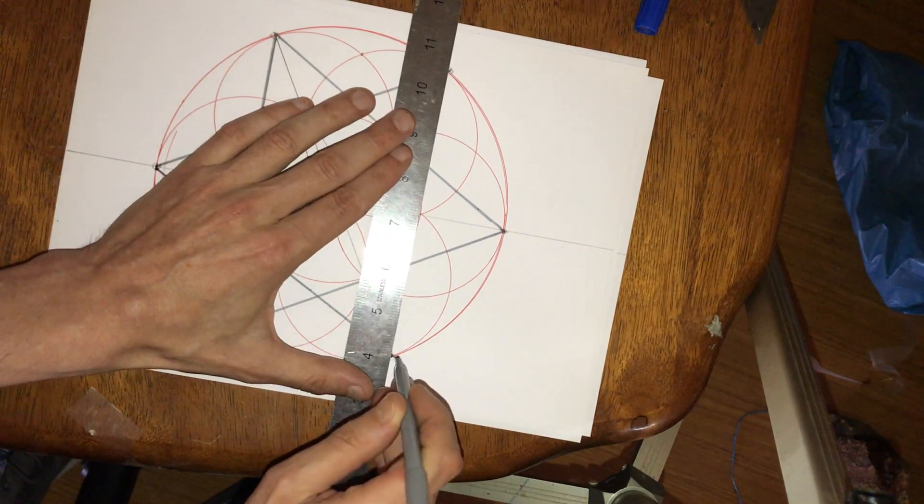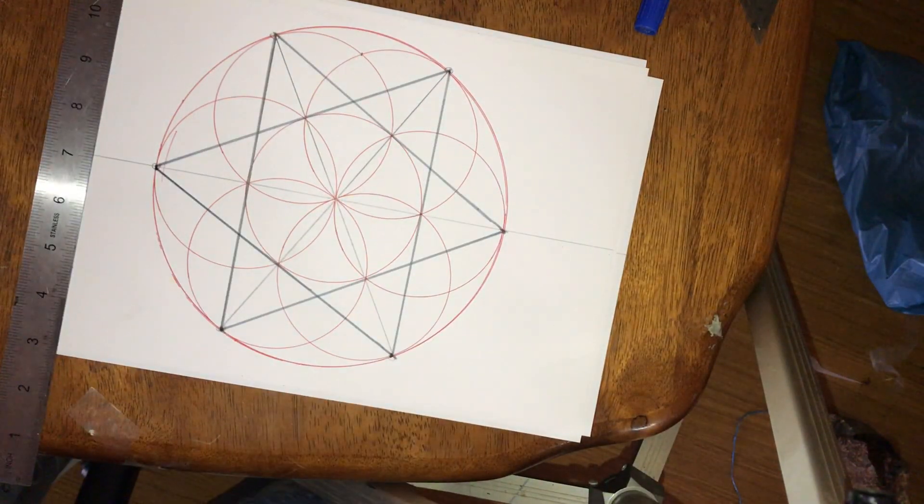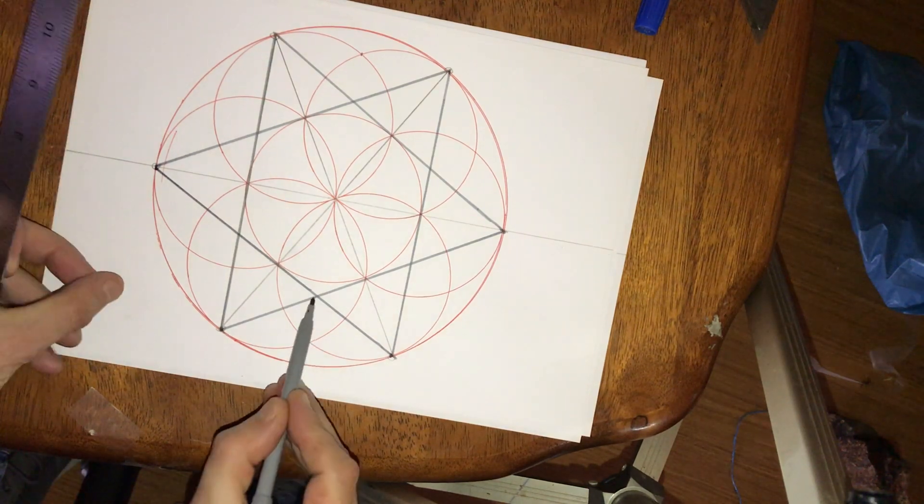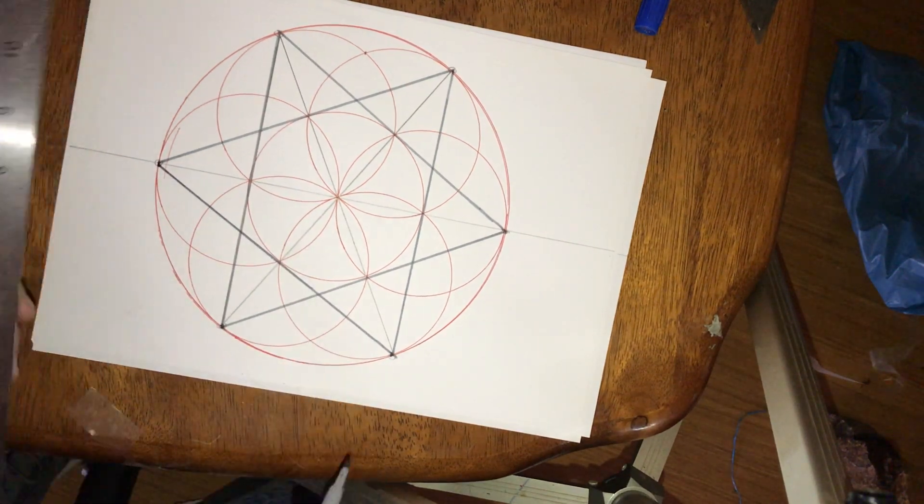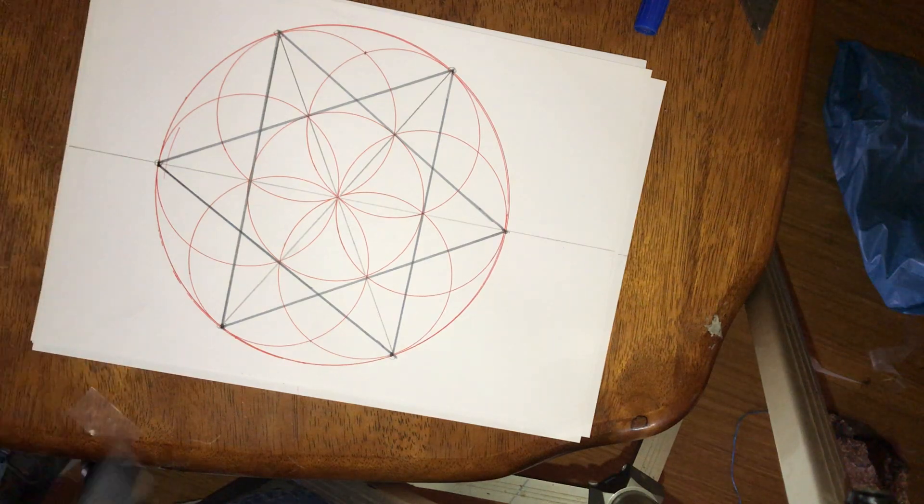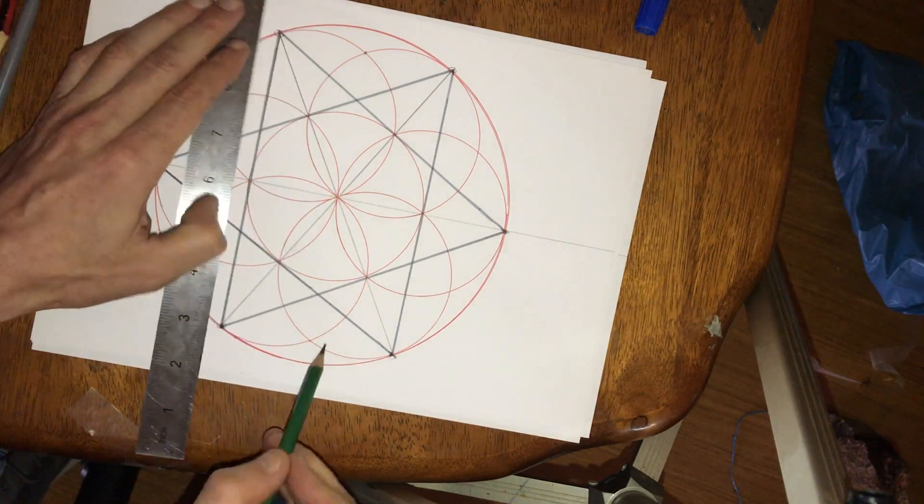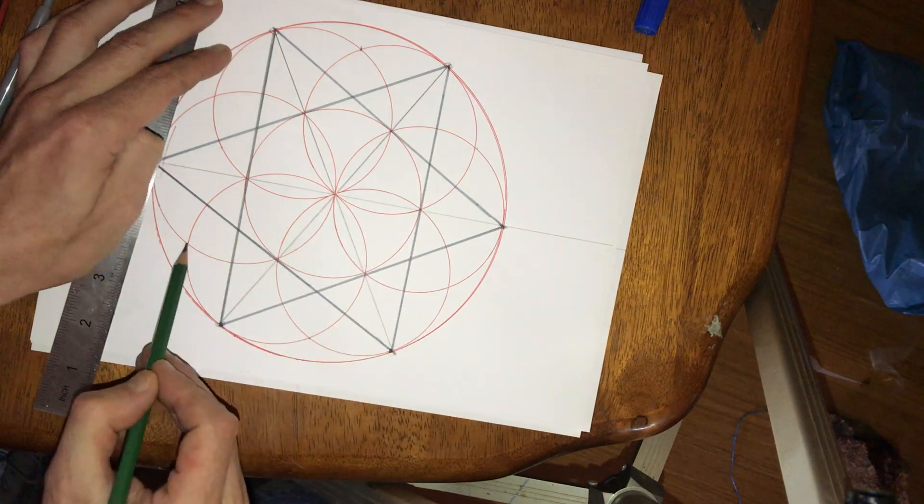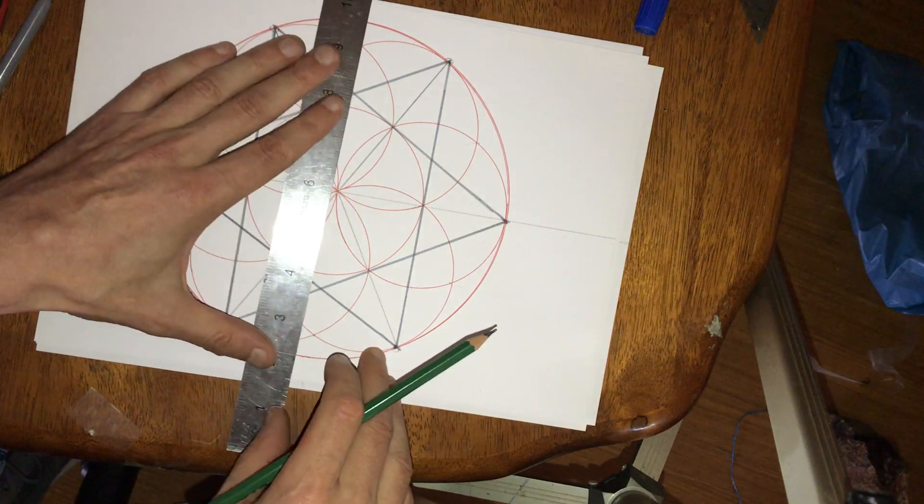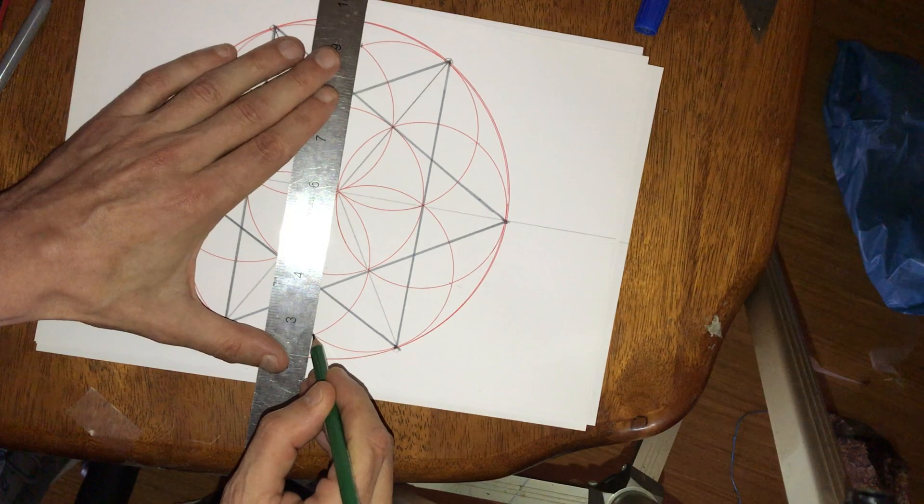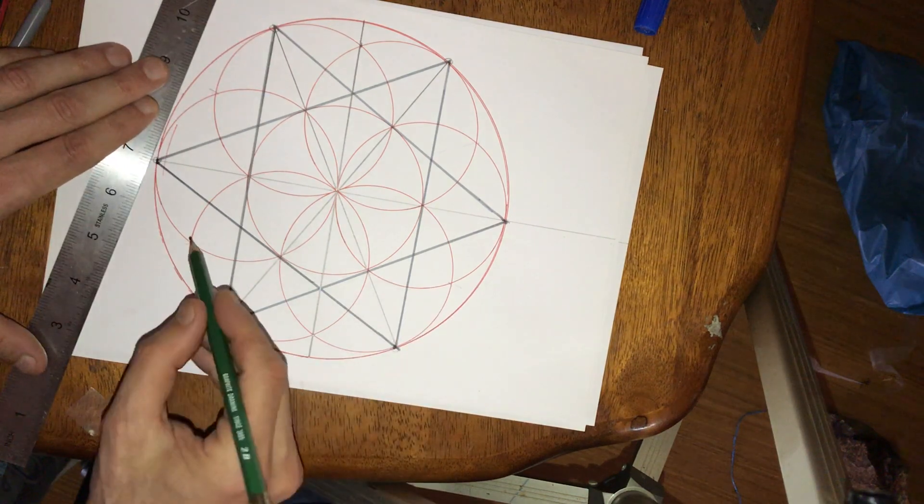This will then give us the construction points we need to do a 12 pointed star, and then we'll do a 24 pointed star. You can use that as a basis to be as artistic as you want to draw a clock face. We already have those points built in. Already have those points - through the center and that would line up there. We're dividing the circle up into 12 units, and you'll notice it also goes through where those triangles intersect.